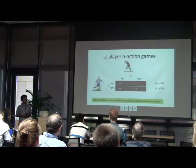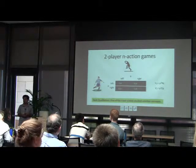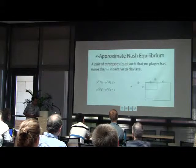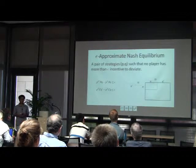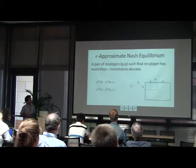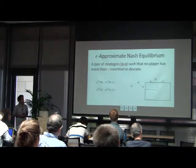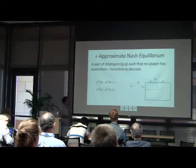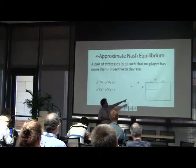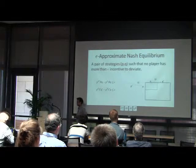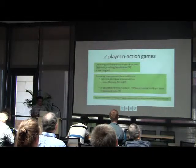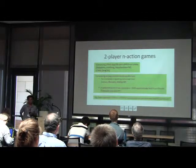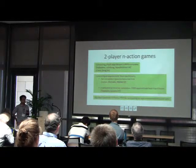One thing people are often interested in is computing a Nash equilibrium, which is a pair of strategies P and Q such that no player has any incentive to deviate. Another quantity of interest is an approximate Nash equilibrium: a pair of strategies P, Q is an epsilon approximate Nash equilibrium if no player has more than epsilon incentive to deviate. Unfortunately, we now know that these problems are hard to compute — computing a Nash equilibrium is PPAD-complete, and for approximate Nash equilibrium we don't know if there is a PTAS.